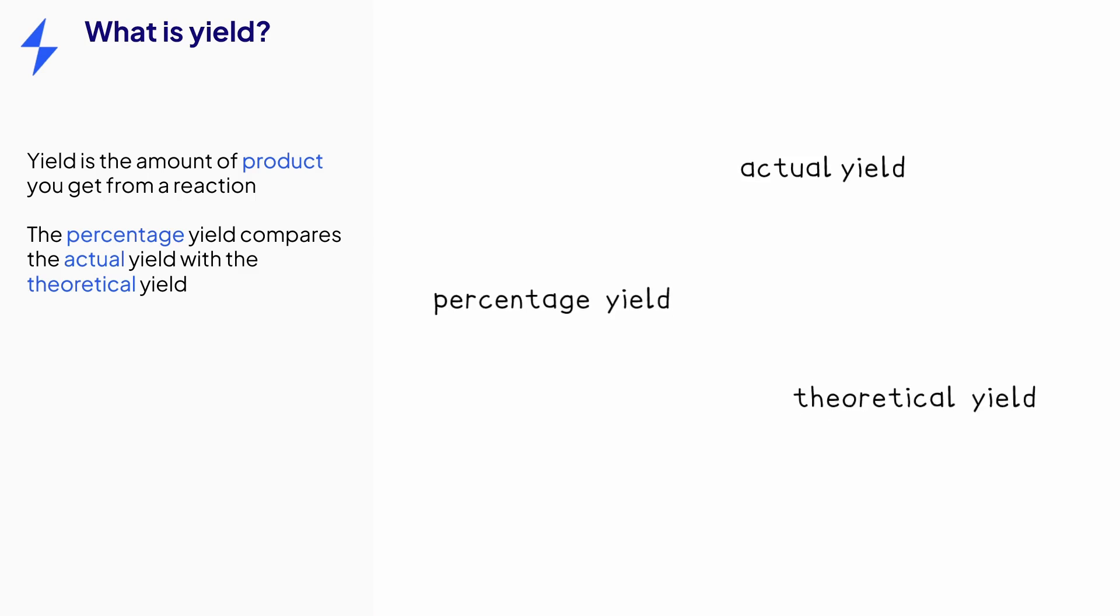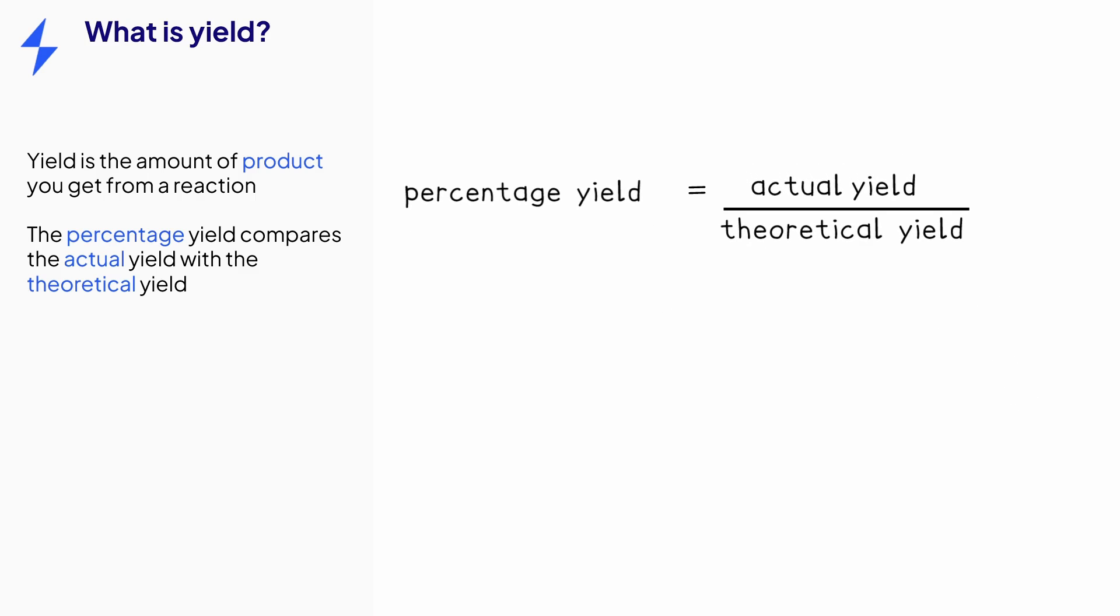We can use this equation shown here to calculate it. Don't forget to multiply by 100 to give the ratio of actual yield to theoretical yield as a percentage. This means that for a reaction that has a 50% percentage yield, only half of the calculated amount of product would actually be produced. It is important that you learn this equation, as you are not given this in an exam.